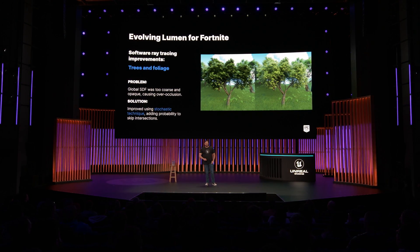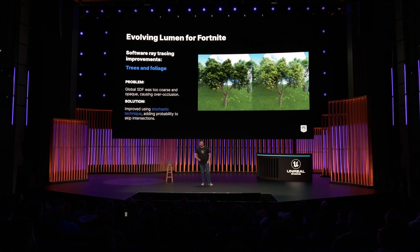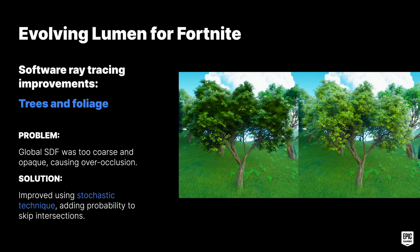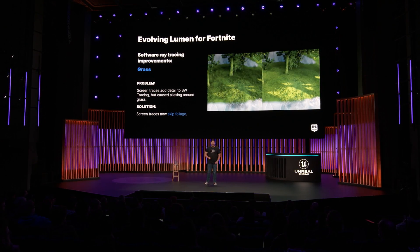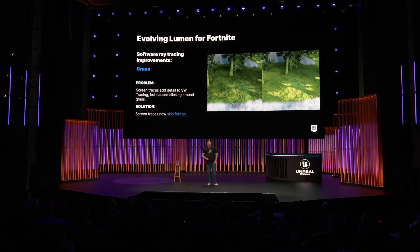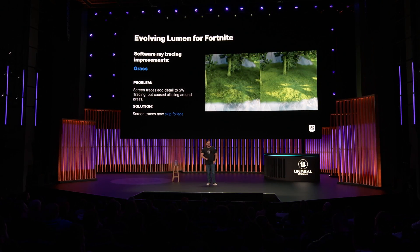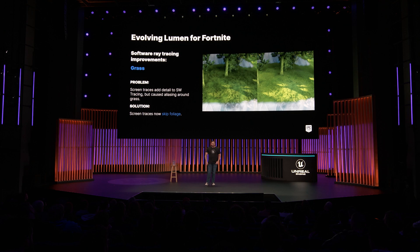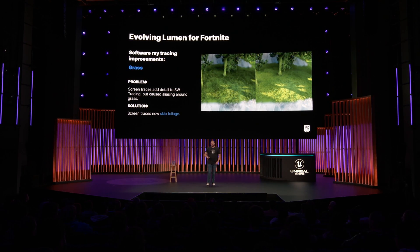The approximate nature of software ray tracing introduced several challenges. The coarse and opaque nature of the global signed-distance field presented over-occlusion issues with trees and foliage. We developed a new stochastic way to intersect the SDF where a choice is made at each step of the ray march whether or not to intersect — this more accurately models the aggregate nature of the canopy. Lumen software ray tracing also adds detail to GI with screen traces. However, aliasing could be observed when these screen traces hit grass blades, so we solved this by skipping screen trace hits on foliage.